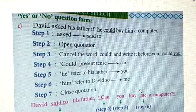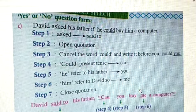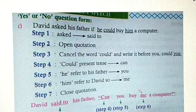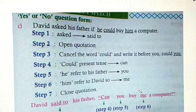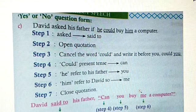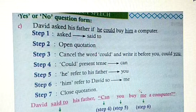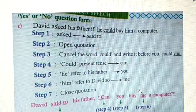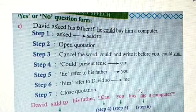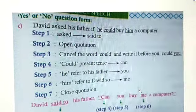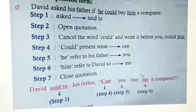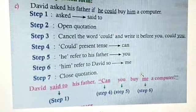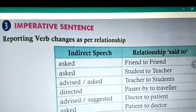Example: 'David asked his father if he could buy him a computer.' First step: 'asked' becomes 'said to.' Second step: open quotation. Third step: cancel the word 'could' and write it before 'you' — 'could you.' Fourth step: 'could' (past tense) becomes 'can' (present tense). Fifth step: 'he' refers to his father, so it becomes 'you.' Sixth step: 'him' refers to David, so it becomes 'me.' Seventh step: close quotation. Answer: 'David said to his father, can you buy me a computer?'